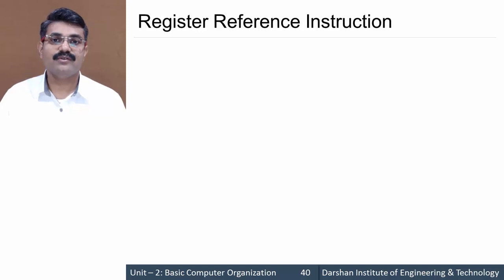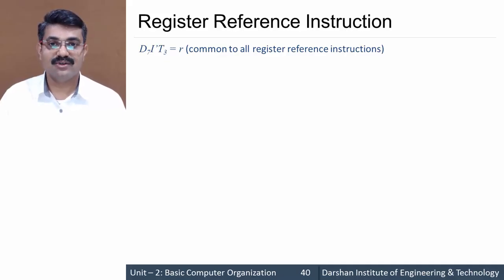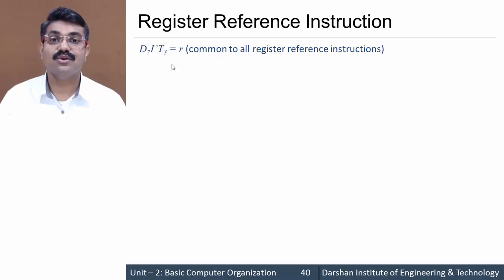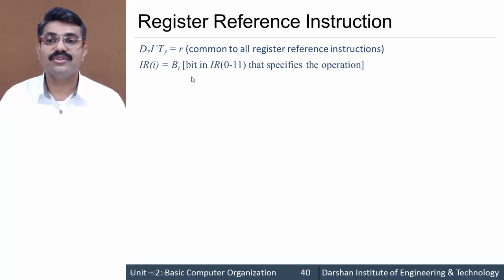As per the instruction cycle discussed earlier, a register reference instruction will be executed when the decoded value d7 is 1, the i bit — that is the 15th bit of the instruction register — is 0 (so i-dash), and at time t3. But which specific instruction it is will be decided based on the corresponding bits of IR register, bits 0 to 11.